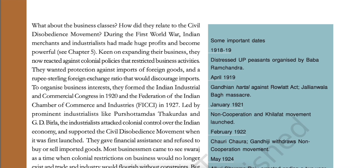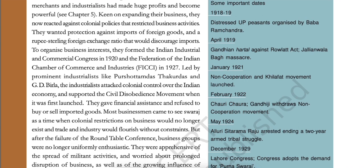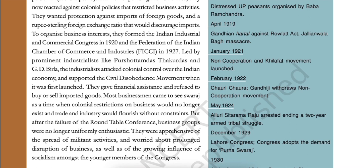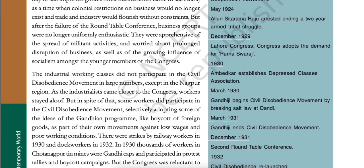What about the business classes? During the First World War, Indian merchants and industrialists had made huge profits and become powerful. Keen on expanding their business, they reacted against colonial policies that restricted business activities. They wanted protection against imports of foreign goods and a rupee-sterling exchange ratio that would discourage imports. To organize business interests, they formed the Indian Industrial and Commercial Congress in 1920 and the Federation of Indian Chamber of Commerce and Industries in 1927. Led by prominent industrialists like Purushottamdas Thakurdas and G.D. Birla, the industrialists attacked colonial control over the Indian economy and supported the civil disobedience movement when it was first launched. They gave financial assistance and refused to buy or sell imported goods. Most businessmen came to see Swaraj as a time when colonial restrictions on business would no longer exist and trade and industry would flourish without constraints.